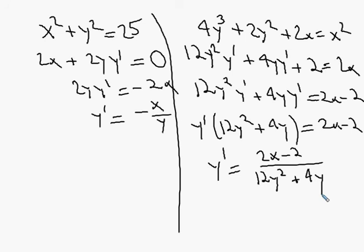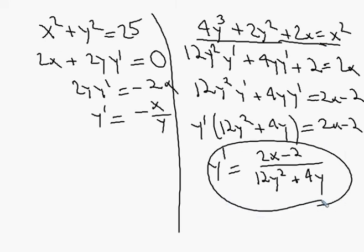On some problems like the one we started with, which originated from a parametric function, the easiest way to find the derivative is the parametric chain rule: dy/dt over dx/dt. But this last example didn't come from a parametric equation, so implicit differentiation is the best approach. If it's easy to solve explicitly, just differentiate directly. If you have a parametric equation, try the parametric chain rule first. But sometimes you have to do implicit differentiation.